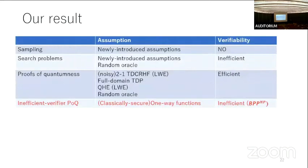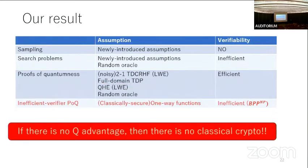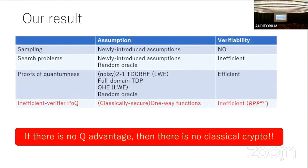In summary: we define Inefficient Verifier Proof of Quantumness, which is very similar to PoQ but the verifier becomes unbounded at the final stage. We constructed IVPoQ from classically secure one-way functions — the minimum assumption in classical cryptography. IVPoQ is not efficiently verifiable but is inefficiently verifiable with the power of BPP^NP. This result implies the interesting connection: if there is no quantum advantage, then there is no classical cryptography.